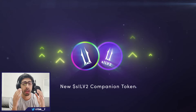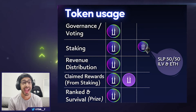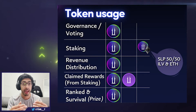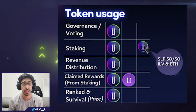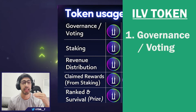Getting stuck into it, the first thing we're going to do today is look into the Illuvium token, which is the ILV token. As you can see on screen, you've got three main uses for the ILV token. The first one is governance and voting.